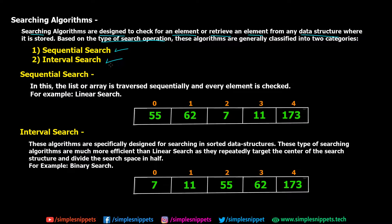In sequential search, as the name suggests, the list or array is traversed sequentially and every element is checked. When we have multiple data structures with different types, we will be storing some elements in those data structures. So when it comes to searching, what we are going to do is look for a particular element in that data structure.